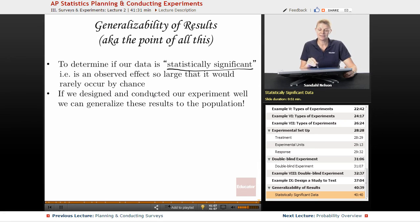If we design and conduct our experiments well, we can generalize these results to the whole population. If things are statistically significant, we can say the whole population may be statistically significant. Remember, we need to control, we need to replicate, and we need to randomize, and then we can generalize.